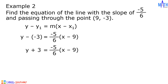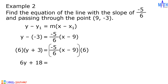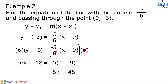Since negative 5 over 6 is a fraction, let us multiply both sides of the equation by 6. We have 6 multiplied by y plus 3 equals 6y plus 18, equals 6 multiplied by negative 5 over 6 times quantity x minus 9. Cancel out 6 and we have negative 5 times quantity x minus 9. Negative 5 multiplied by x minus 9 is equal to negative 5x plus 45. Then we have 6y plus 18 equals negative 5x plus 45.